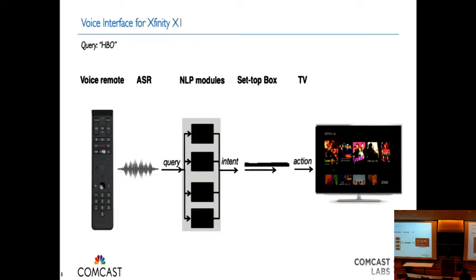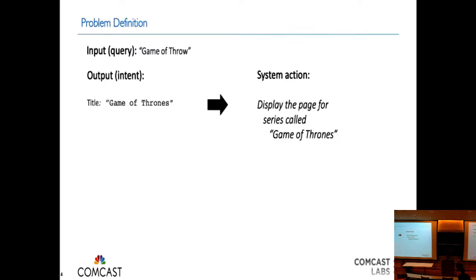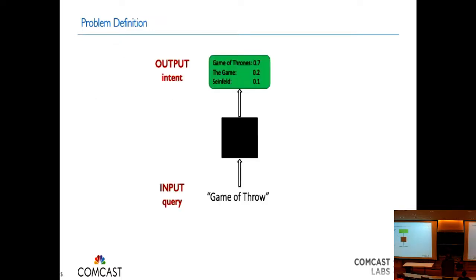The NLP problem definition: we have an input query — let's say it's "game of throw" — notice there's a transcription error; that's where NLP starts. We cannot assume the transcription is always correct. The output is an intent, and for simplicity in the beginning portion of this talk, I'm going to assume the intent is always a program. So there's a title associated with a query — that is the intent. If the intent is title "Game of Thrones," the system action will take you to the page for that show.